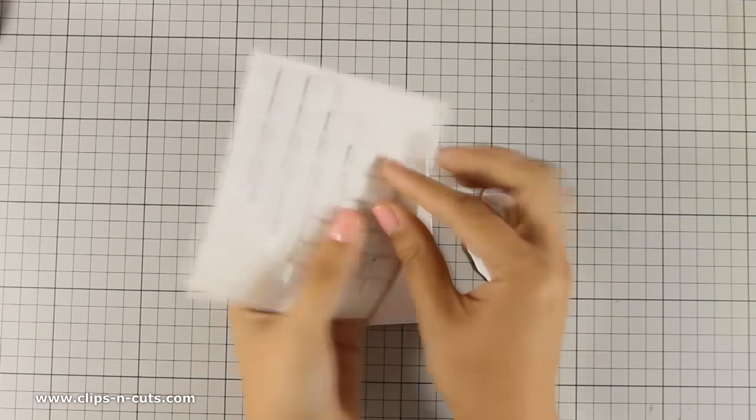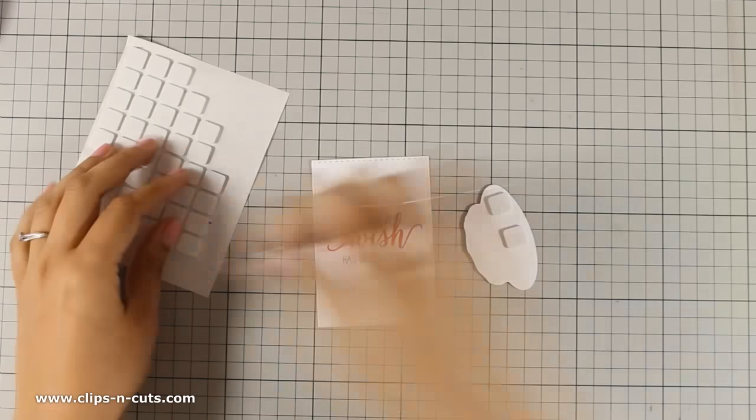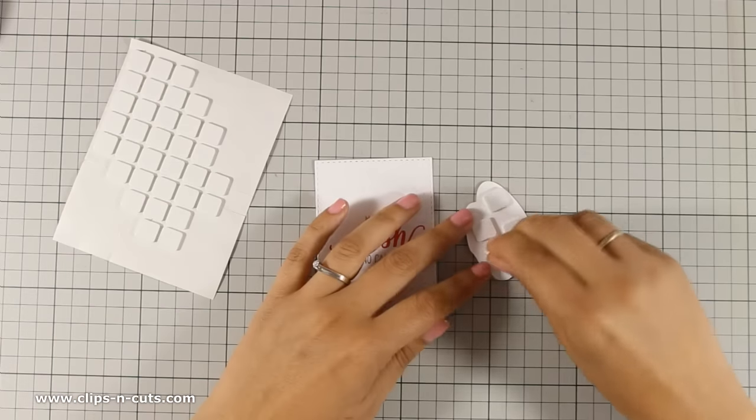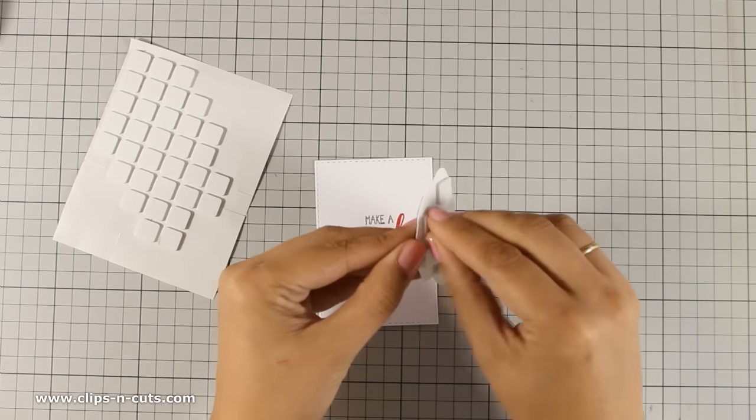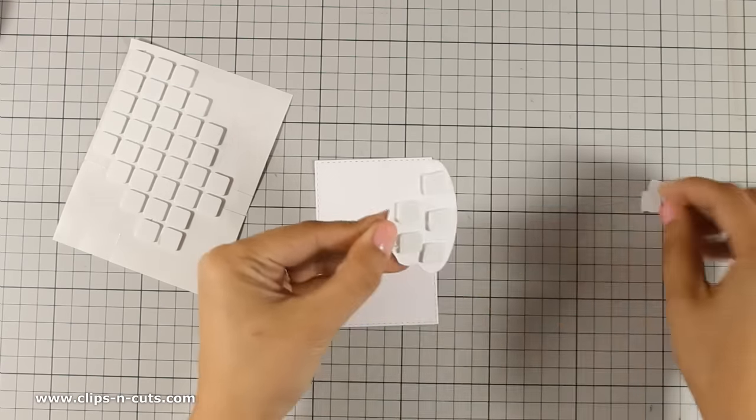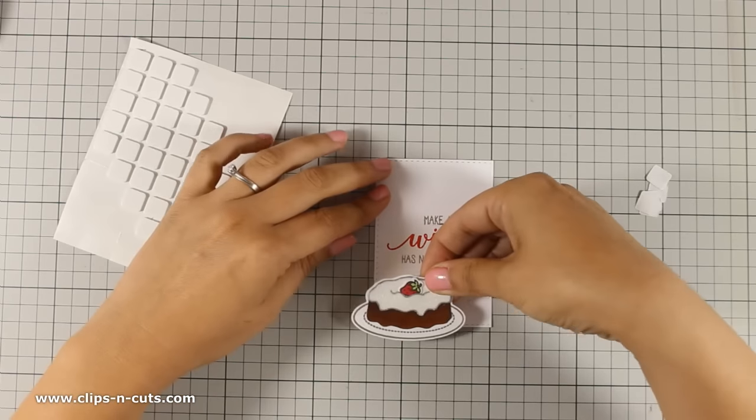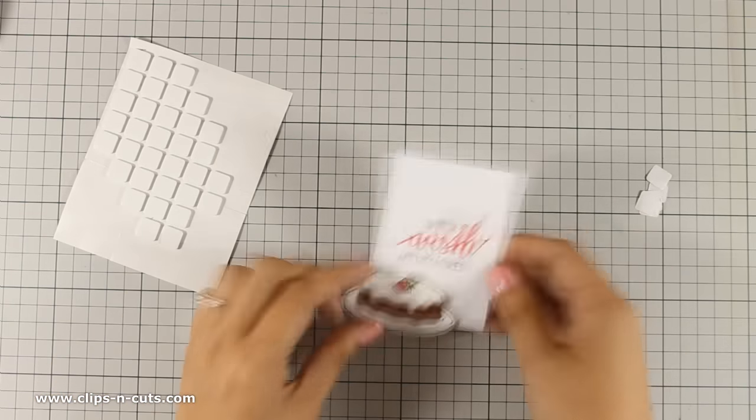I am going to use foam squares at the back of the cake to add a bit of dimension and I am going to stick it at the bottom corner of my panel. Today I am making a standard card that is 4 and a quarter by 5 and a half and I am going to create the card out of white cardstock.